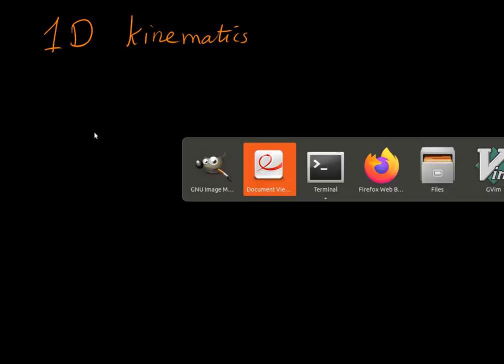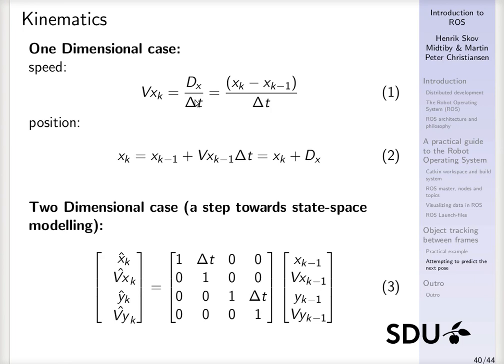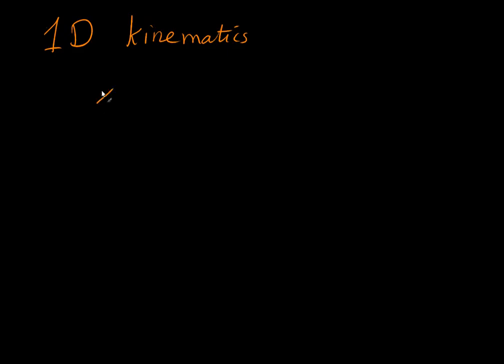So for 1D kinematics, if we want to describe where we'll be at the current time step K, we can look into where we were in the previous time step plus the velocity in the x-direction multiplied with the time difference between step K-1 to step K. And this will give us the prediction.